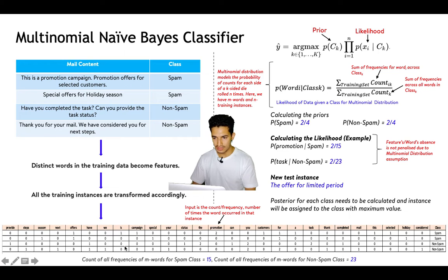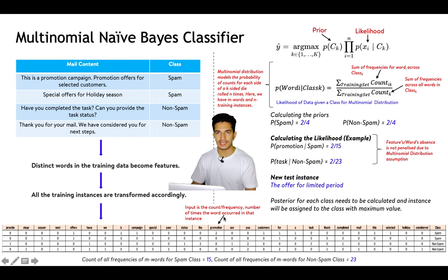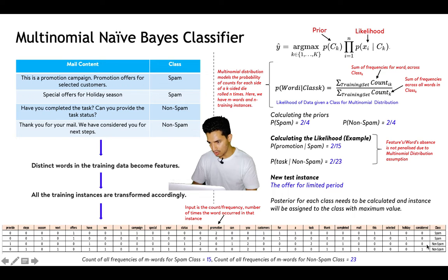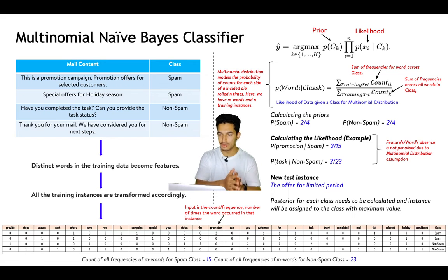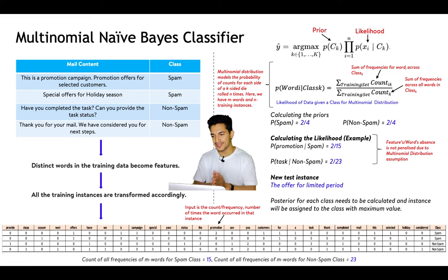For Multinomial Naive Bayes, everything is similar but the likelihood uses the Multinomial distribution: the probability of a word given a class equals the number of times the word occurred divided by all words within that class. This captures word frequency. For example, the probability of 'promotion' given spam is 2 out of 15 total words across spam instances. Similarly, 'task' given non-spam is 2 out of 23. We multiply prior and likelihood to find the posterior, and classify to the class with the higher value.